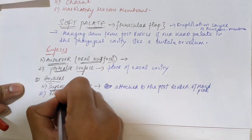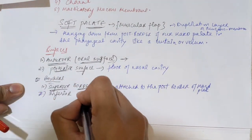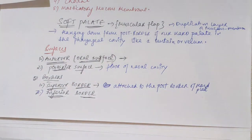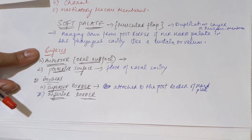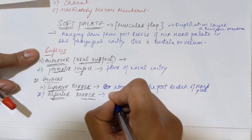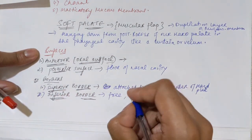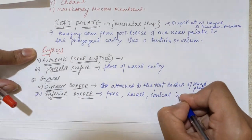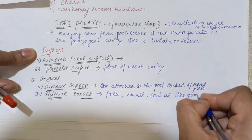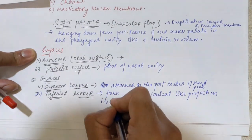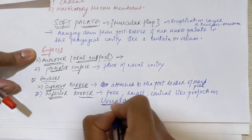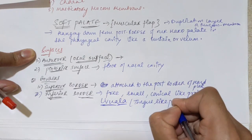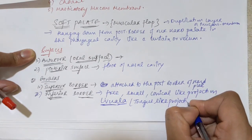The second border is the inferior border, which is actually free. This free inferior border forms the anterior boundary for our pharyngeal isthmus, that is the fauces. When this border ends, it forms a small conical-like projection which we call the uvula.